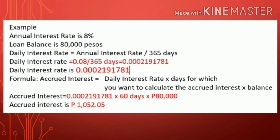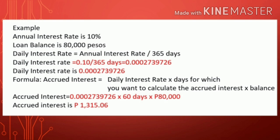Example 1: The annual interest rate is 8% and the loan balance is 80,000 pesos. Daily interest rate equals 0.08 divided by 365 days, which equals 0.0002191781. Accrued interest equals 0.0002191781 times 60 days times 80,000 pesos. Accrued interest is 1,052.05 pesos.